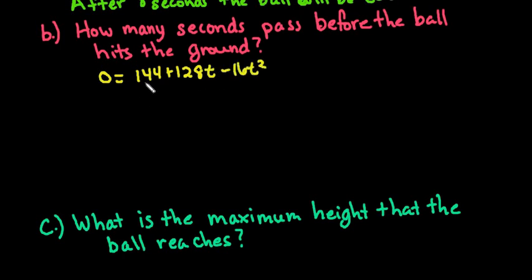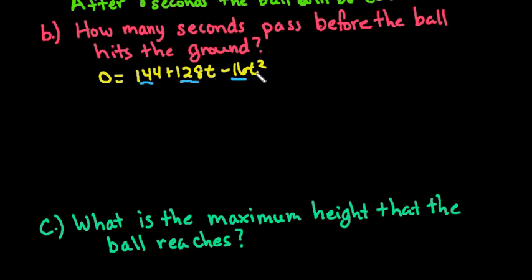You have a couple different options here. First, get it in standard form where the t squared term is first and positive. I want to see if 144, 128, and negative 16 have anything in common, and if they do I'll take it out. If they don't, I would advise using the quadratic formula — you can always use the quadratic formula, you can't always factor. This one I know is factorable so that's the method I'm going to use. The quadratic formula works 100% of the time; factoring only works sometimes.